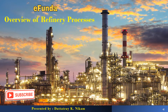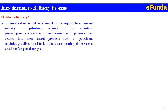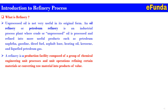Let's begin with today's topic: overview of refinery processes. What is a refinery? Unprocessed oil is not very useful in its original form. An oil refinery or petroleum refinery is an industrial process plant where crude or unprocessed oil is processed and refined into more useful products such as petroleum naphtha, gasoline, diesel fuel, asphalt-based heating oil, kerosene, and liquefied petroleum gases.